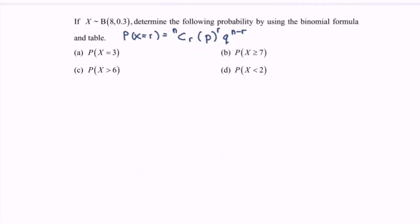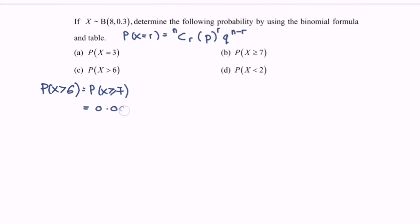For question c, we need P(X>6). Since this is a discrete binomial distribution, the sign is very important. We modify the inequality: P(X>6) = P(X≥7). This refers back to question b, so the answer is 0.0013, whether using the formula or the table.